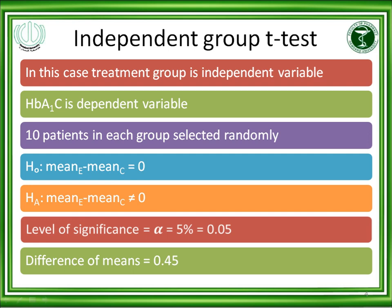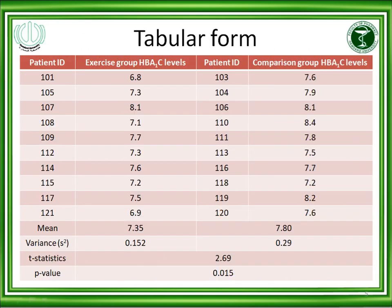The null hypothesis states that the mean of the exercise group is equal to the mean of the control group — that is, the difference in means equals zero. The alternate hypothesis states that this difference is not zero, because many studies show that exercise leads to better glycemic control. The level of significance alpha is defined as 5%, or 0.05, and the observed difference in means is 0.45.